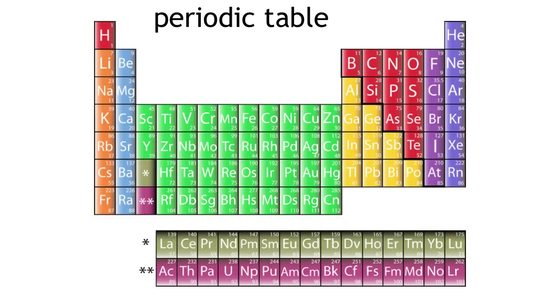Different isotopes of elements do not have separate positions on the periodic table. They occupy the same spot because they have the same number of protons.